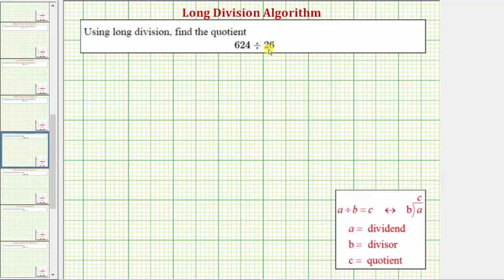We want to use long division to find the quotient. We have a three-digit number divided by a two-digit number. The first step is to write the quotient in long division form. So we can write 624 divided by 26 in this form.